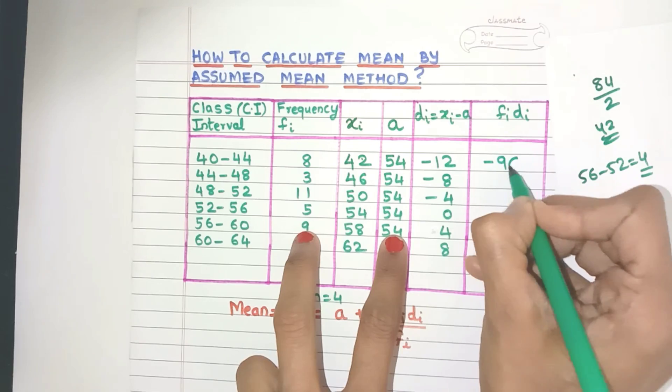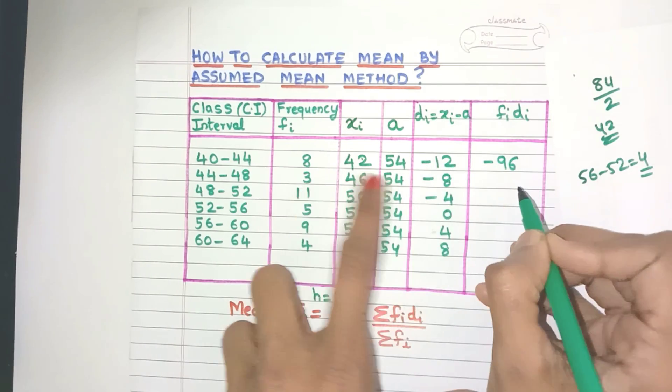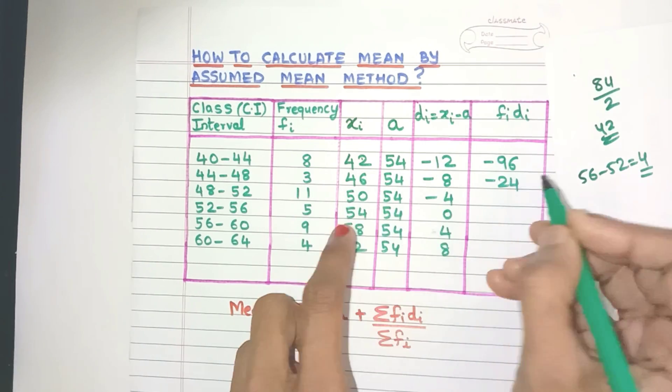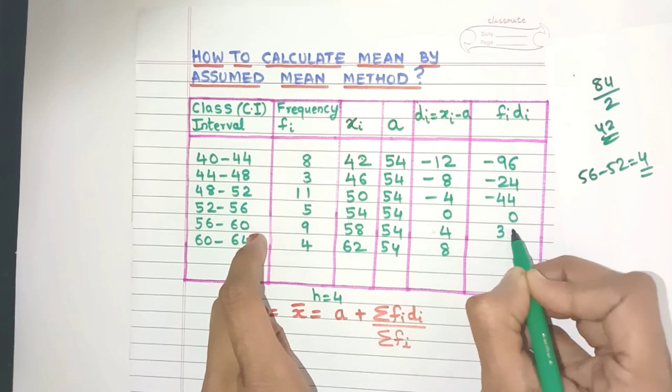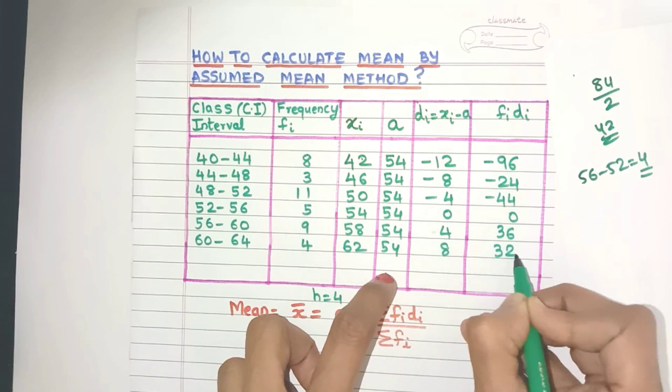So 8 into minus 12 minus 96. Remember the minus sign everywhere. So it's minus 24 here. It's minus 44, 0, 36 and yes, 32. Fine.